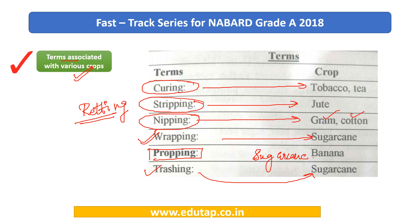In the exam, there can be a question like: nipping is related to which of the following crops? You can get options like gram or cotton. So if you find these two options in the paper, obviously that is going to be the correct answer.